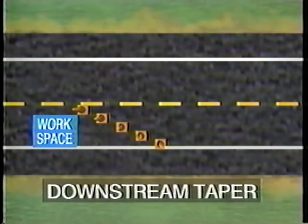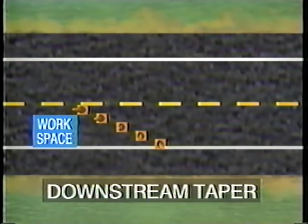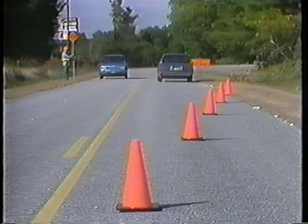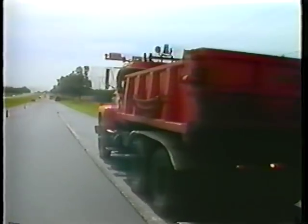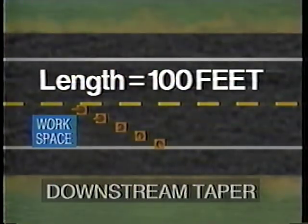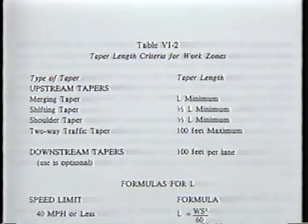A downstream taper is used at the downstream end of the work to allow drivers back into the lane that was closed. It's placed in the termination area. While closing tapers are optional, they may be useful in smoothing traffic flow. However, they may not be advisable when material trucks move into the work area by backing up from the downstream end. If a closing taper is used, it should be at least 100 feet in length per lane. A table from the Manual on Uniform Traffic Control Devices shows the lengths for the five types of tapers.